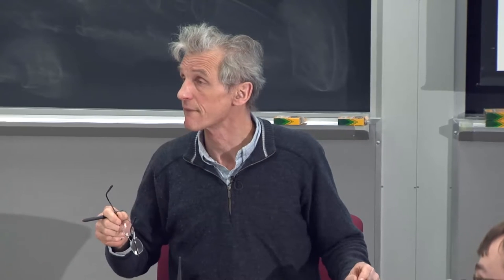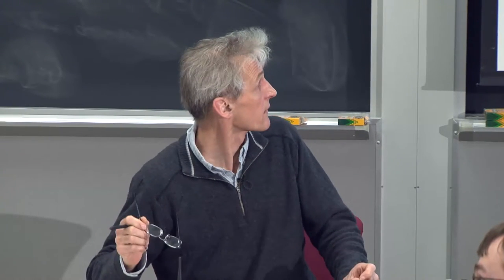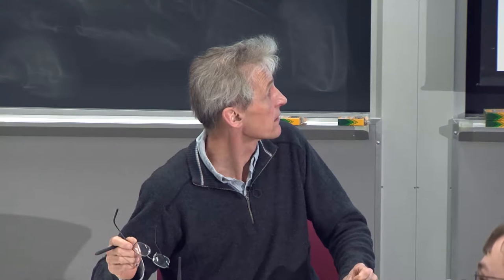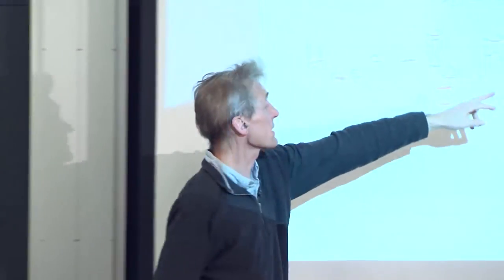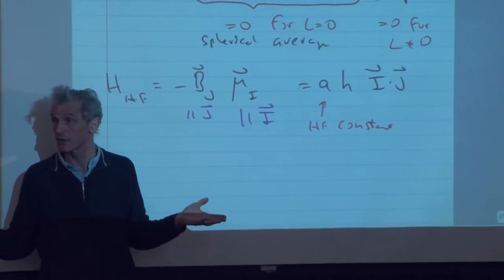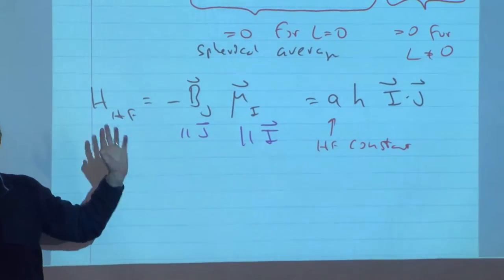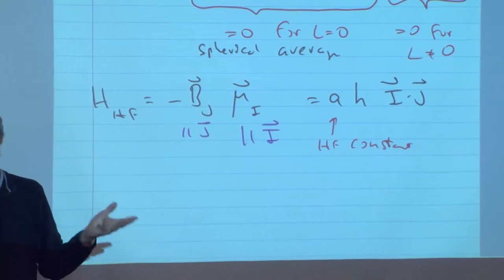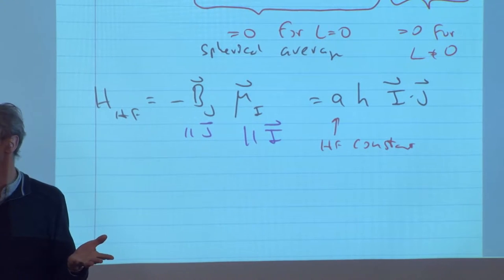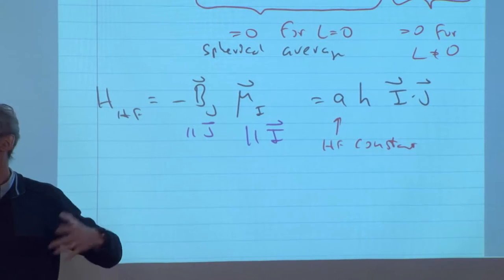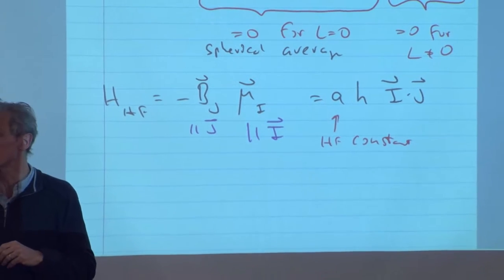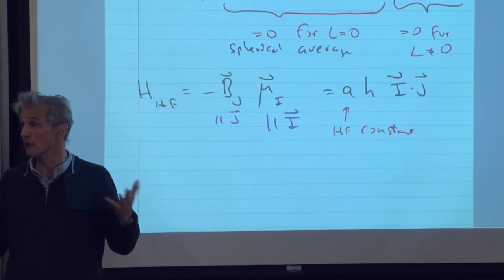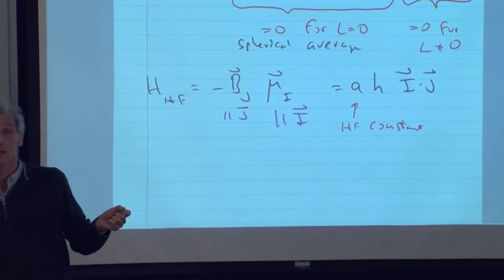Question: are I and J dimensionless, or do they carry units of ħ? Here they are dimensionless. Because A is in frequency units — in hertz — and if you multiply by h, we have an energy. So I and J measure the angular momentum in units of ħ; they are normalized angular momentum operators. The quantum numbers of I and J are not 1/2 or 1 in units of ħ — they're just 1/2 or 1.